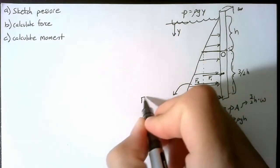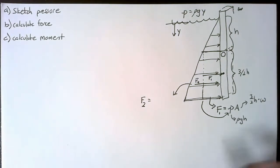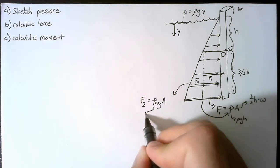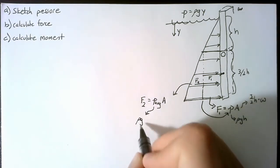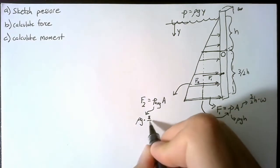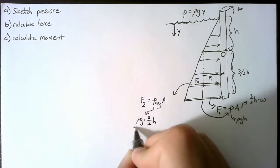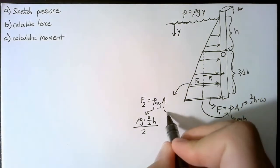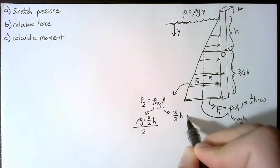So our second force is equal to the average pressure multiplied by our area. This is going to be rho g times 3 halves h divided by 2. This area doesn't change. 3 halves h times w.